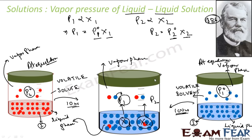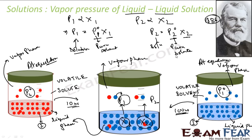That is Raoult's law. It says the partial pressure of component one in the solution in the vapor phase is p1 = p1-not × x1. What is p1-not? p1-not is the total pressure of that component when it is in pure form. And for a third component, p3 = p3-not × x3. That is Raoult's law.